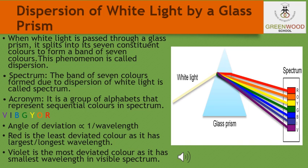What is the spectrum? The band of seven colors formed due to the dispersion of white light is known as the spectrum. There is an acronym for this — VIBGYOR. It is a group of alphabets that represents the sequential colors in the spectrum.